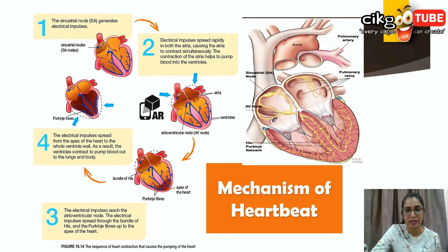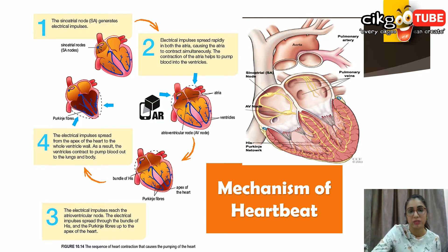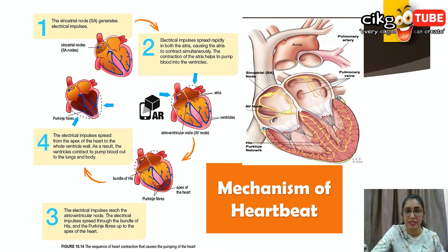Now let's look at the mechanism of heartbeat step by step. First, the SA node generates electrical impulses that spread through the muscle cells of both atrial walls, causing both atria to contract and push oxygenated blood from the left atrium to the left ventricle, and deoxygenated blood from the right atrium to the right ventricle — both happening simultaneously. The electrical impulses cannot flow directly from the SA node to the ventricles because they are blocked by an insulating ring of tissue in the wall between the atrium and the ventricle.